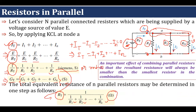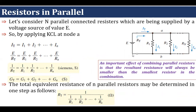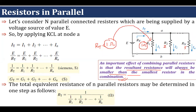This is a very important point. In a parallel-connected resistance combination, the resultant resistance will always be smaller than the smallest resistor in the combination. For example, if one resistor is 1 Ohm, another is 2 Ohm, and Rn is 5 Ohm, then RT will be less than 1 Ohm — less than the smallest resistor connected in the parallel combination.